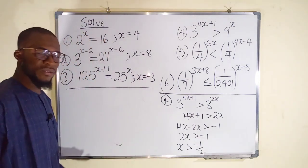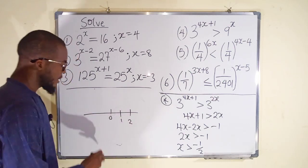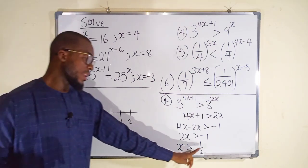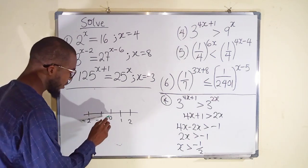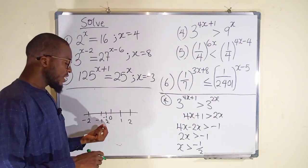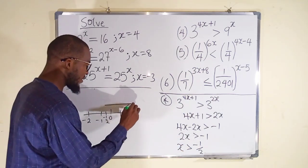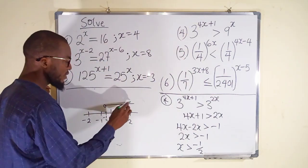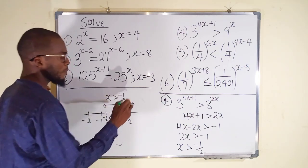We can demonstrate this on a number line. We have 0, 1, 2 to the right, and negative 1, negative 2 to the left. Negative 1 over 2 is halfway between 0 and negative 1. So x is greater than negative 1 over 2, meaning all values to the right of that point satisfy the inequality. We draw an open circle at negative 1 over 2 with an arrow pointing right, showing x is greater than negative 1 over 2.